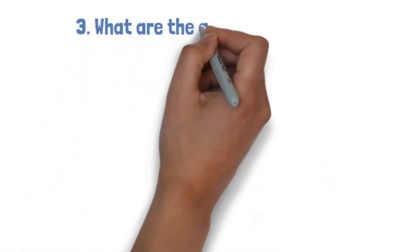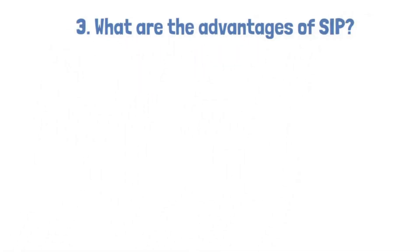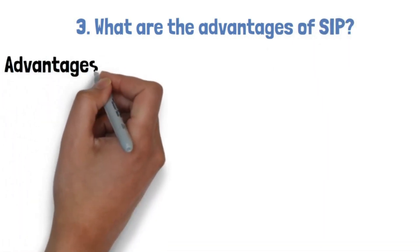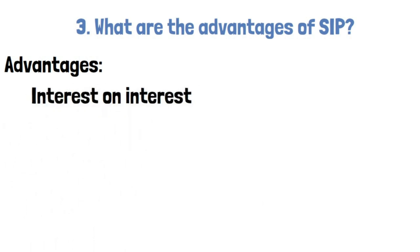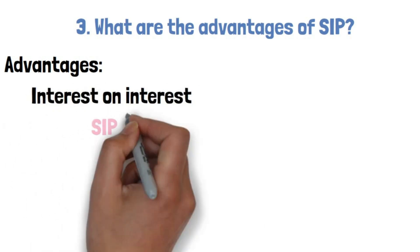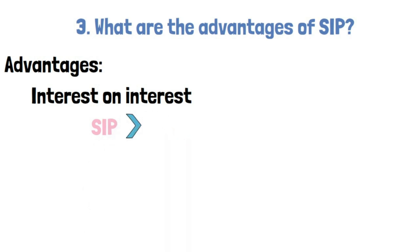3. What are the advantages of SIP? Now that we've established how SIP works, let's look at some of its advantages. Interest on interest, as we showed in the last section, a systematic investment plan, SIP, generates more potential wealth-building channels through compounding than other unsystematic investment methods.